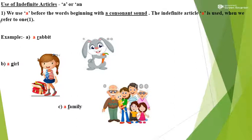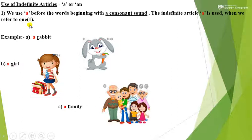Use of indefinite articles A or An. Point number 1: we use A before words beginning with a consonant sound. The indefinite article A is used when we refer to one. Example A: a rabbit — here how many rabbits are there? Only one rabbit, so that is why we have used 'a rabbit'. Likewise: a girl, a family.